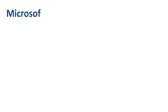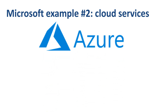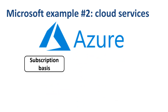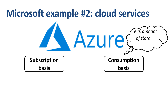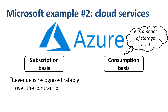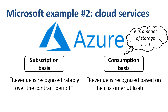Second example: cloud services, such as Microsoft Azure. These services are sold on a subscription basis for a certain time period, or on a consumptive basis. Revenue related to cloud services provided on a subscription basis is recognized ratably over the contract period — in other words, allocated to the various periods of the duration of the contract. Revenue related to cloud services provided on a consumption basis is recognized based on customer utilization — in other words, how much was actually used during a period.